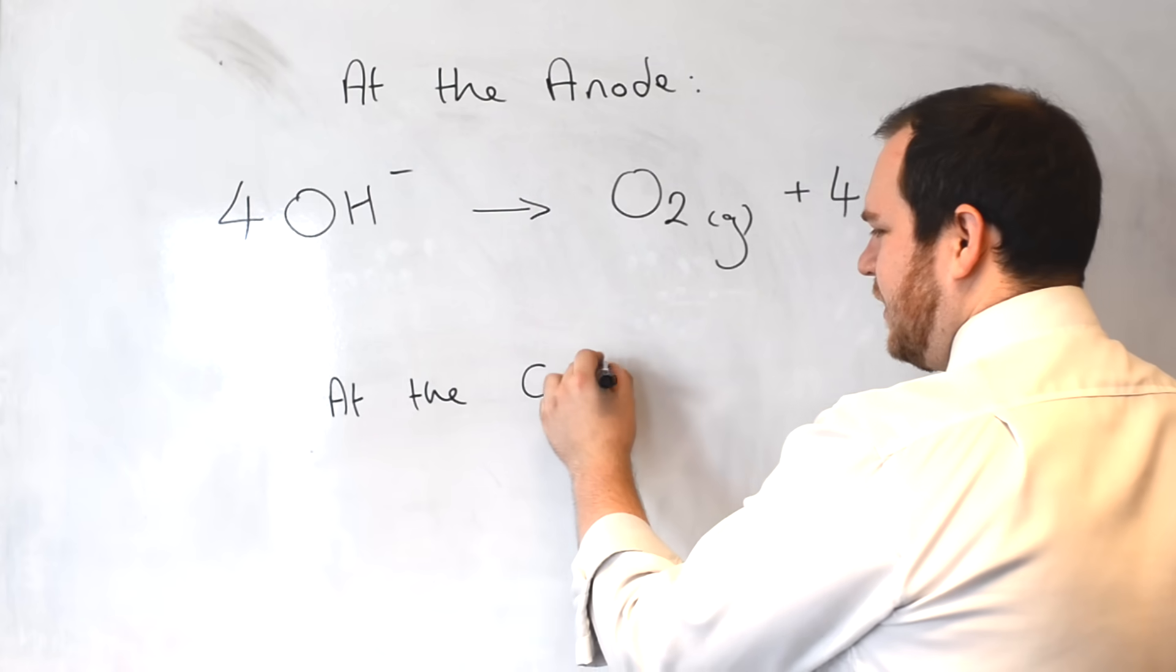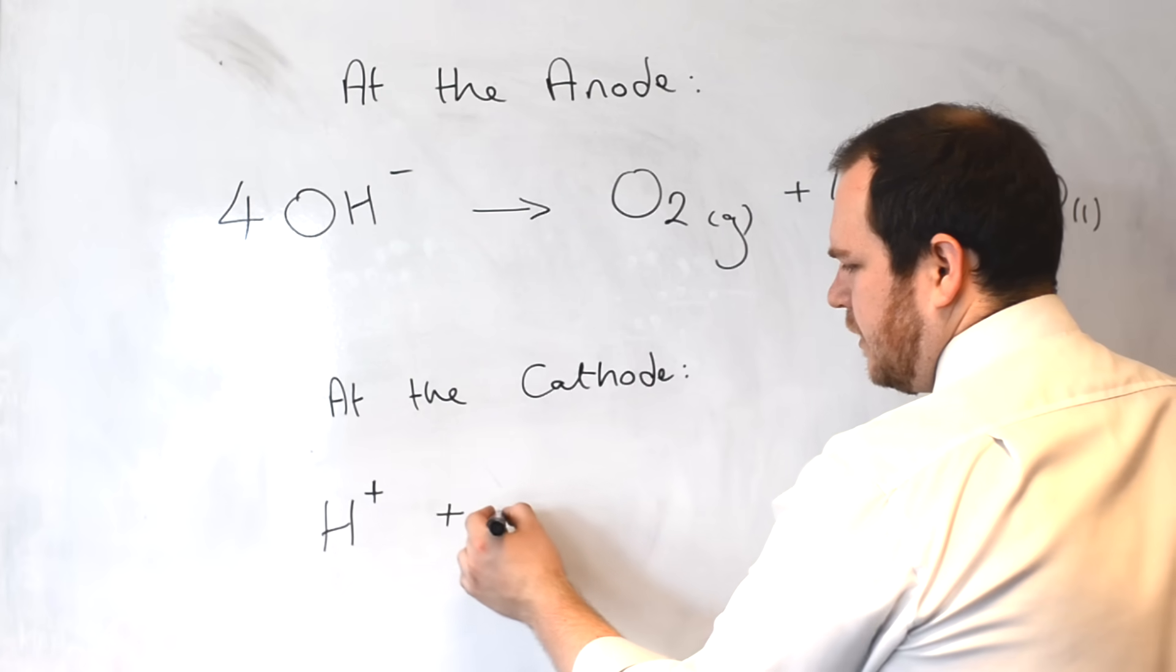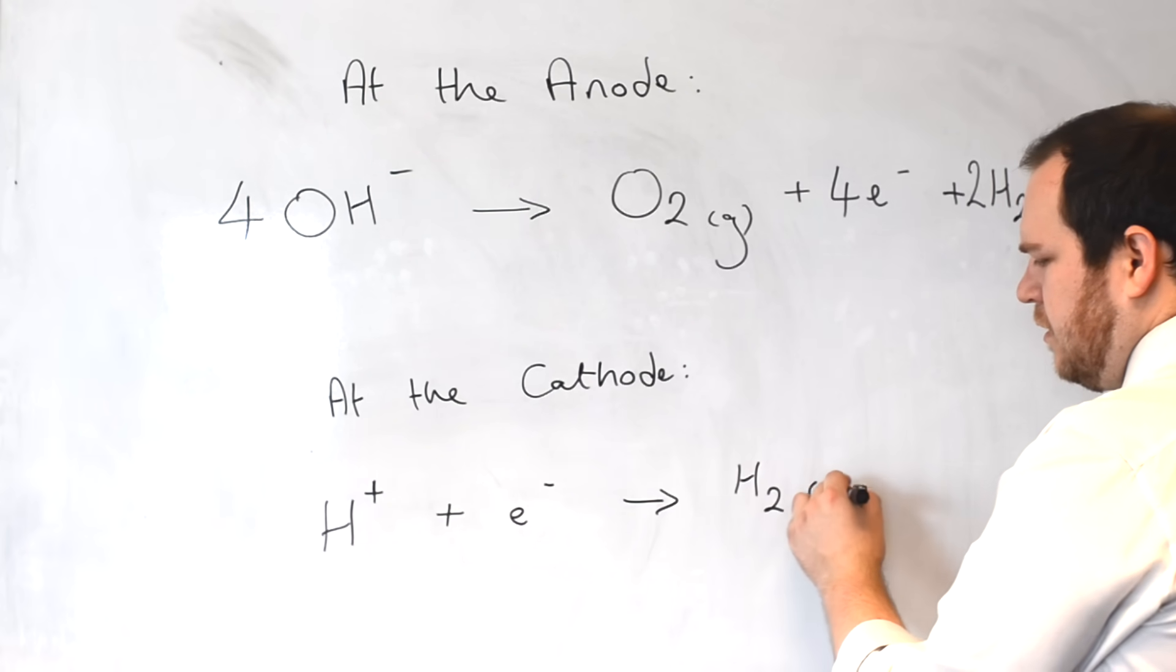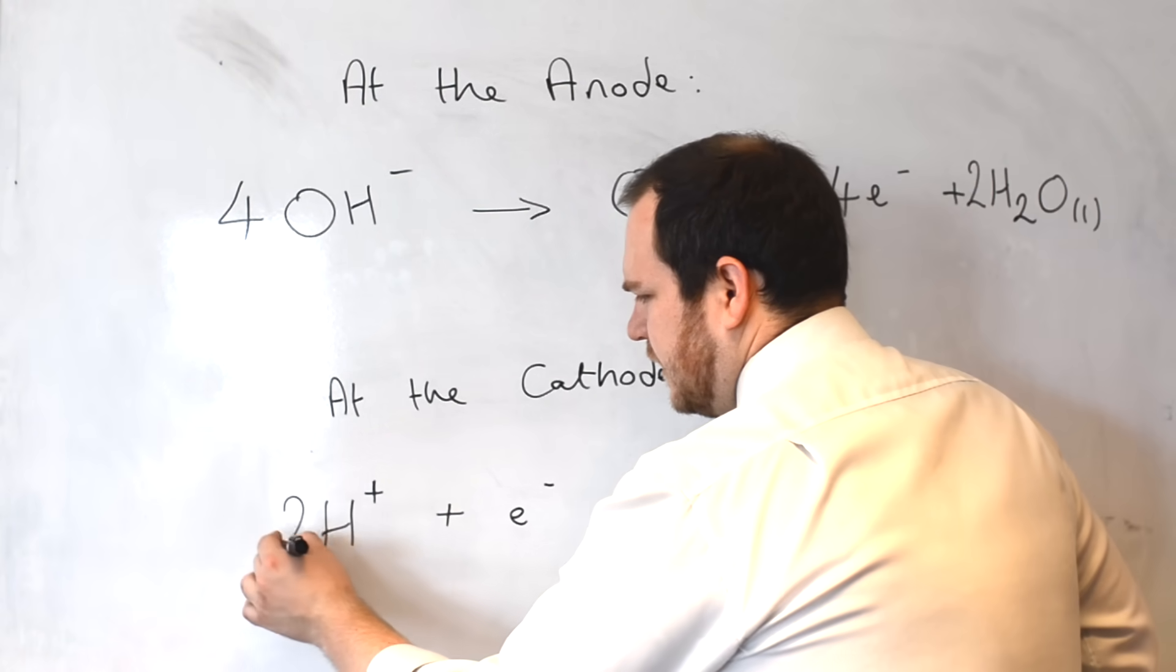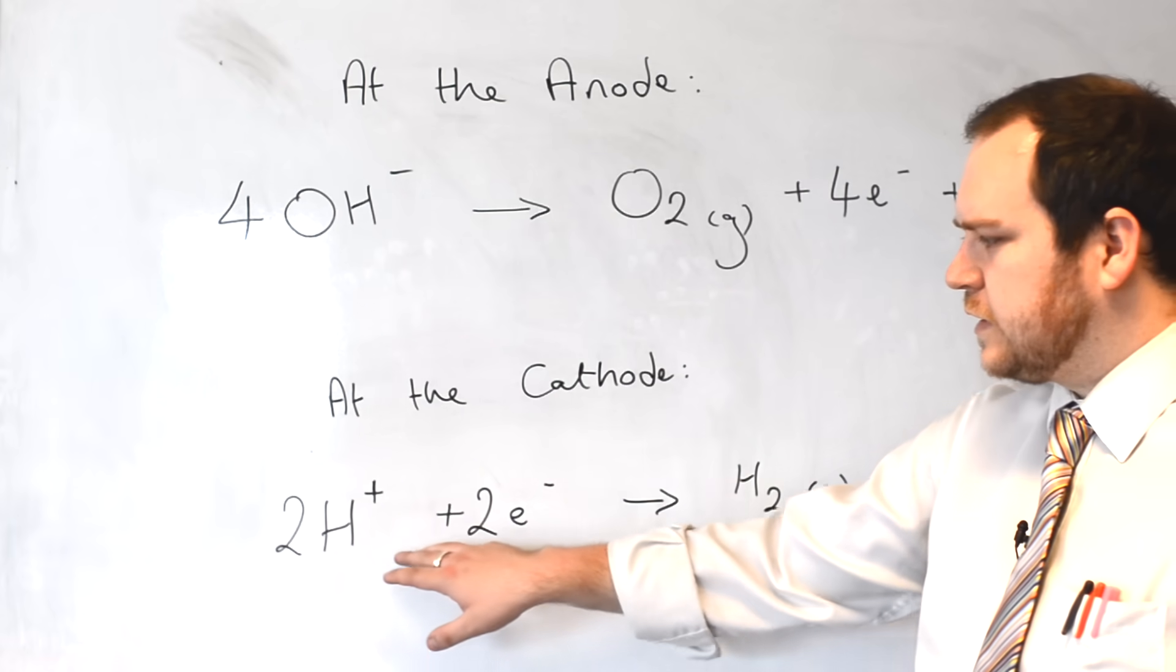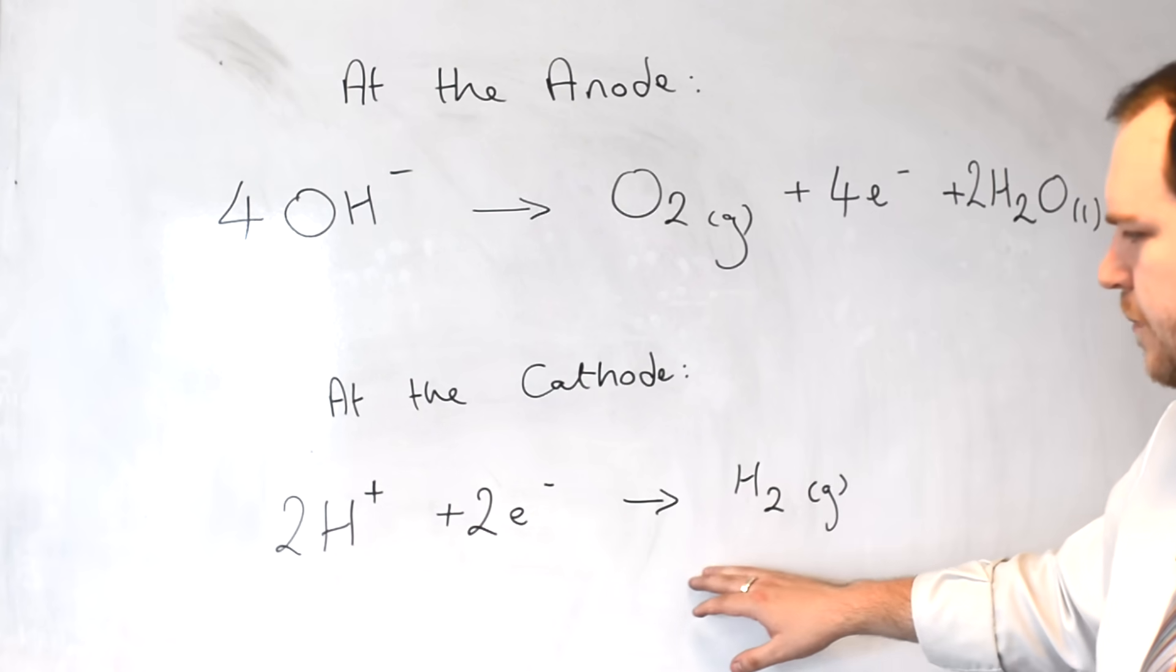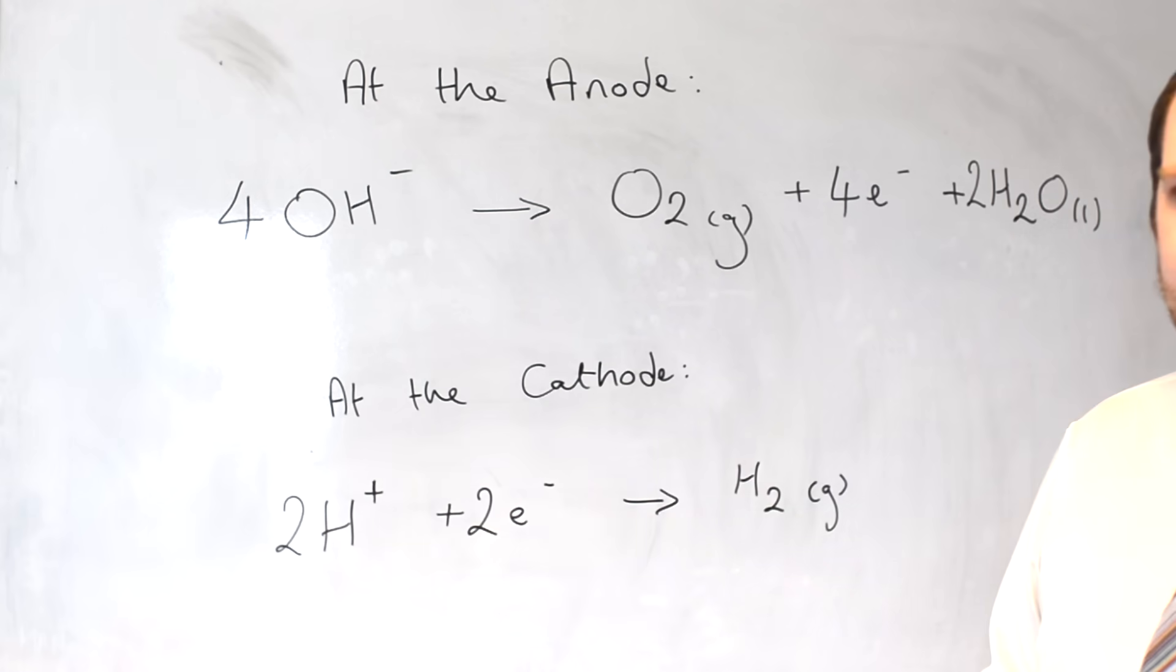At the cathode, we said we had hydrogen being formed. H plus ions from the water gain electrons to form hydrogen gas. Now once again, hydrogen is a diatomic molecule, so we need to balance this with equal numbers of hydrogens but also equal numbers of charges. So with half equations, it's not important only to make sure that all the elements balance but also that all of the charges balance within the equation.